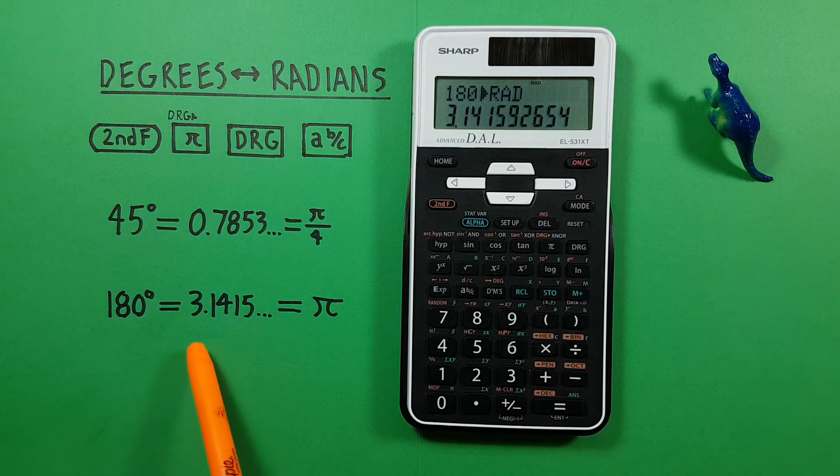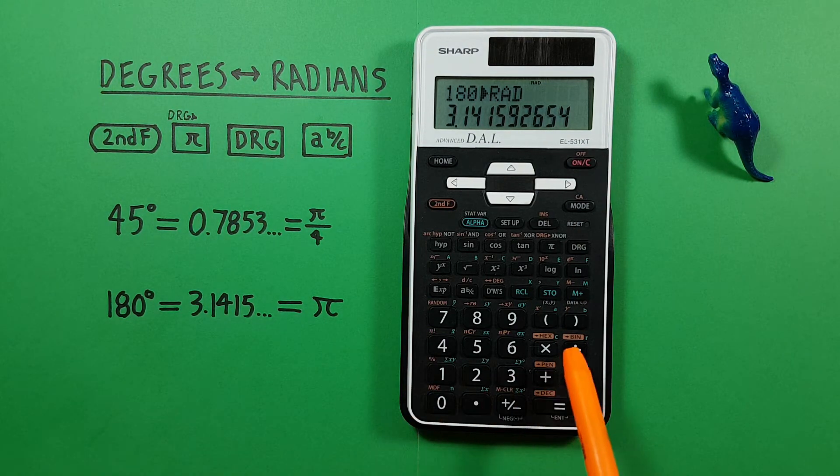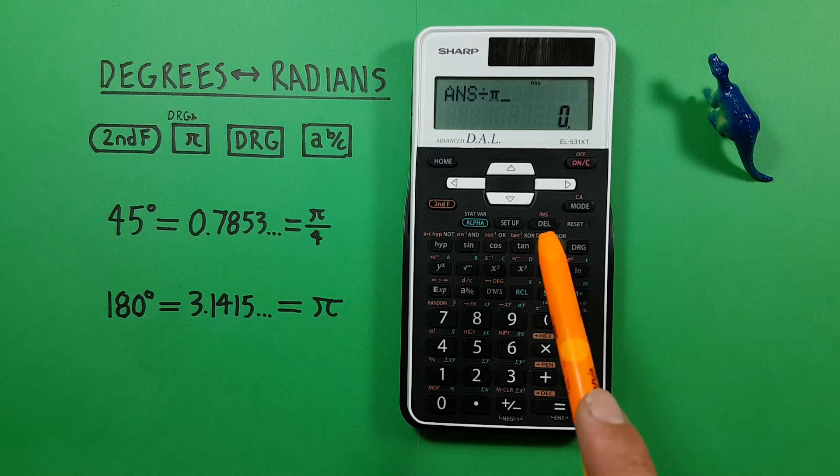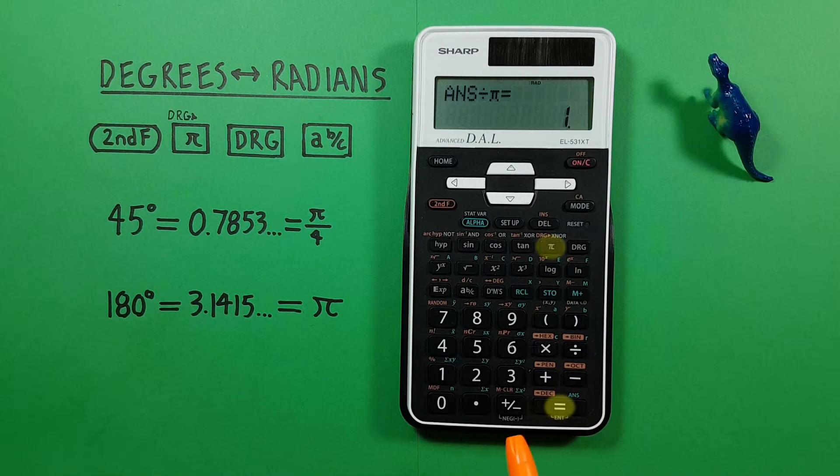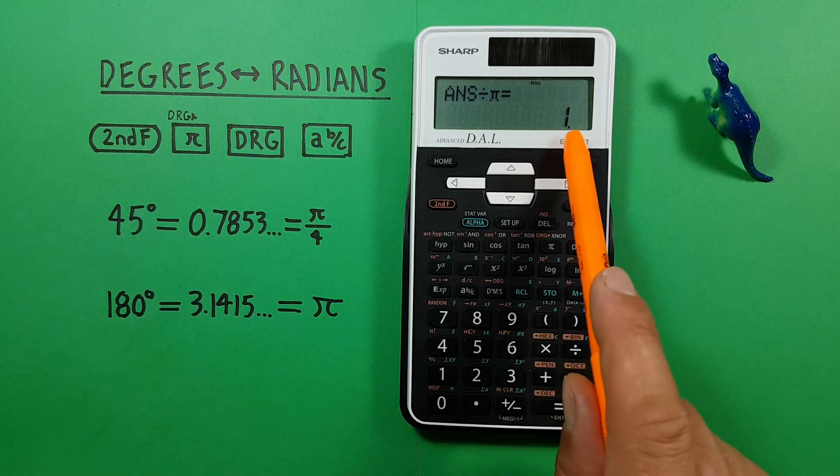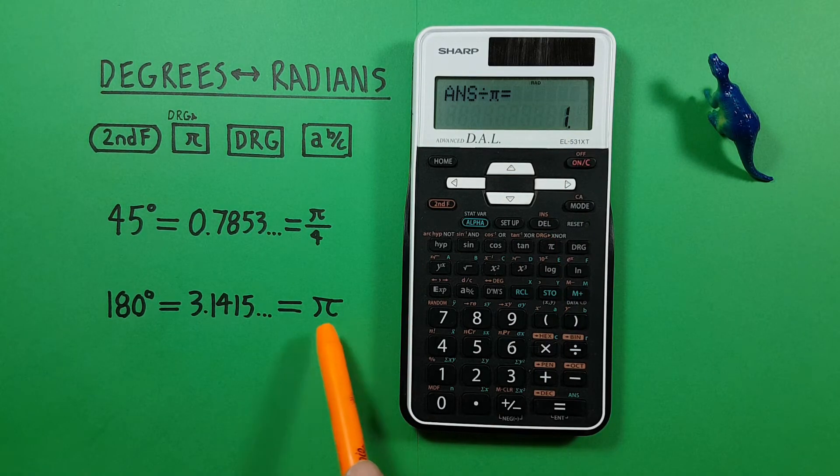Now, this number should be familiar, but if it's not, we can divide it by pi. And see, we get an answer of 1 or pi. So 180 degrees is equal to pi.